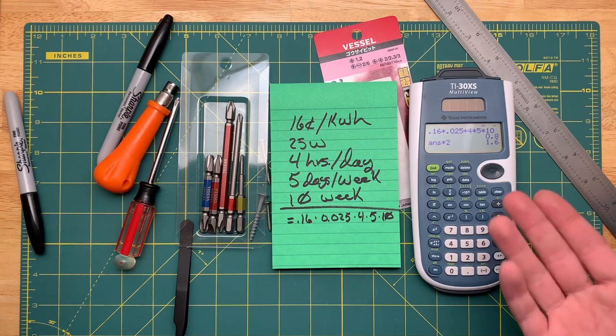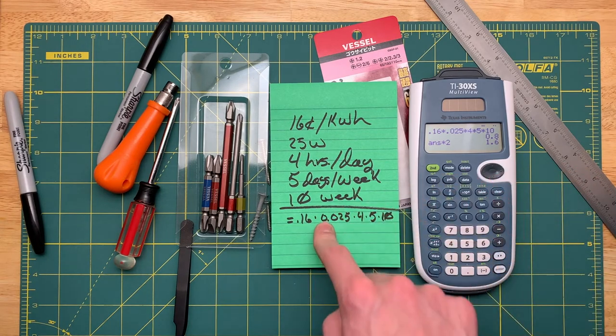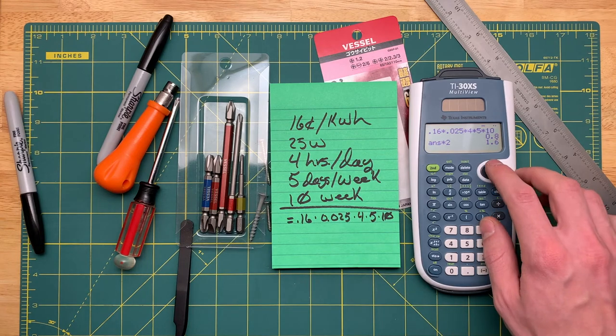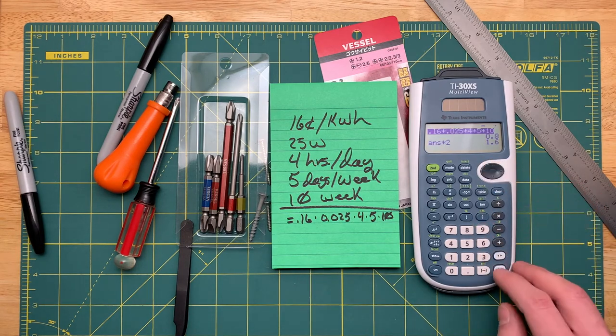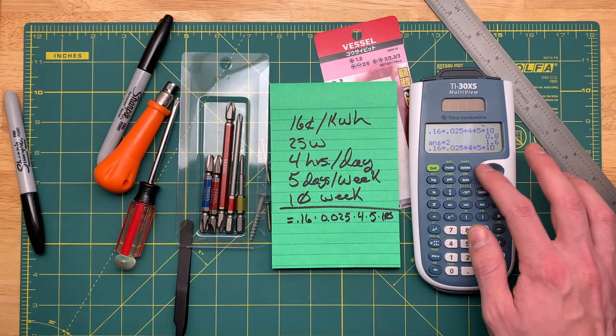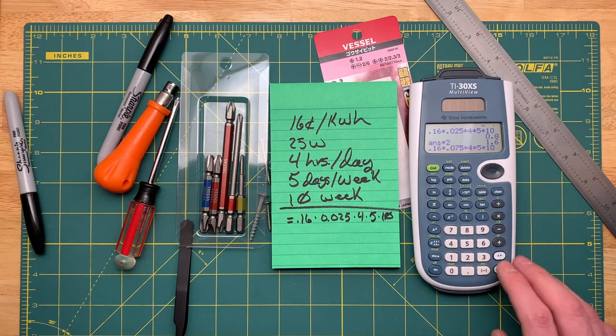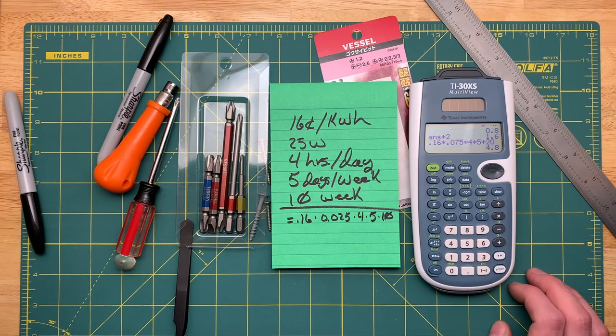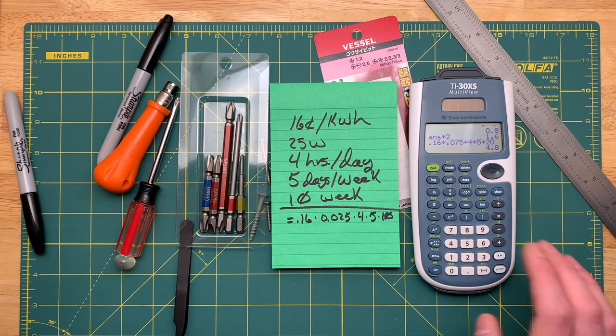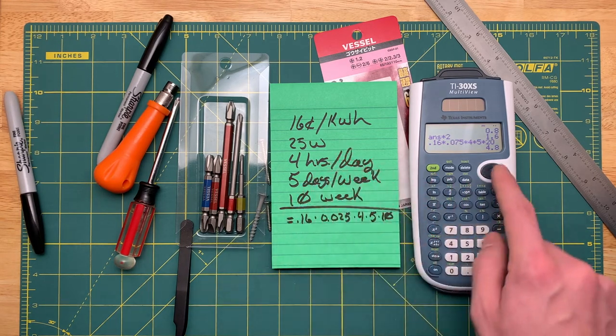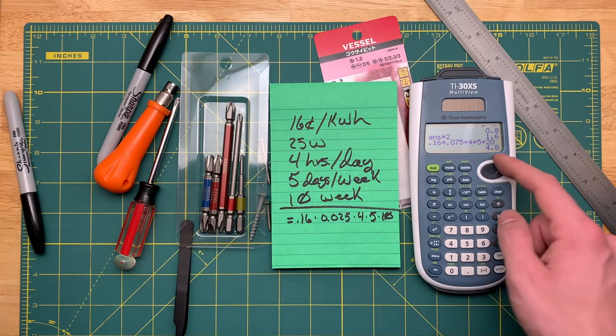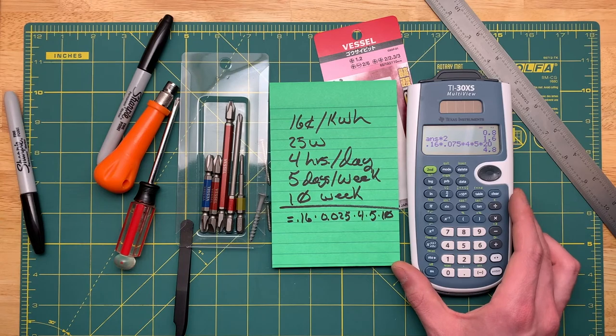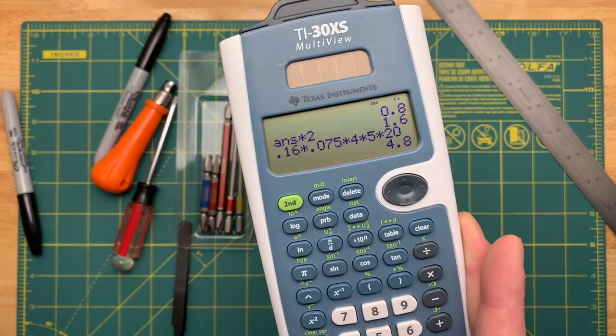That's pretty, that's actually basically free. But now let's say I add a 50 watt heater on top of this. So let's go back up to this original equation and go from 25 to 75, and change the 10 to 20. So it'll cost four dollars and 80 cents if I run at the full 75 watts for four hours per day for 20 weeks at five days a week. That's still pretty cheap.